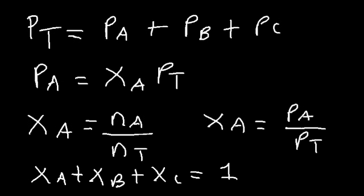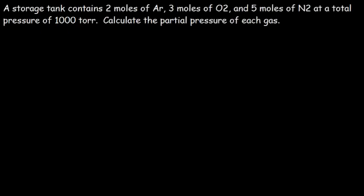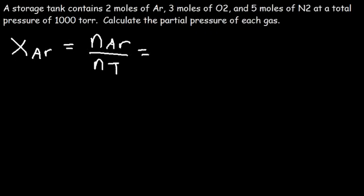Let's try this problem: a storage tank contains two moles of argon, three moles of O2, and five moles of N2 at a total pressure of 1000 torr. Calculate the partial pressure of each gas. First, let's calculate the mole fraction. The mole fraction of argon equals the moles of argon divided by the total moles. We have two moles of argon and the total moles is 2 plus 3 plus 5, which is 10. So the mole fraction of argon is 2 over 10, which is 1 over 5.